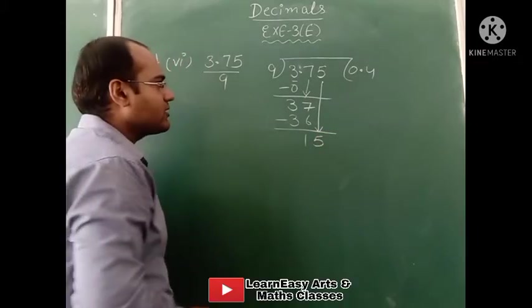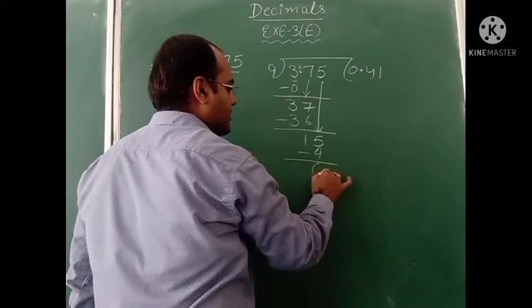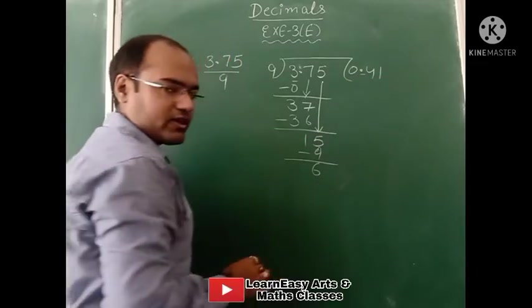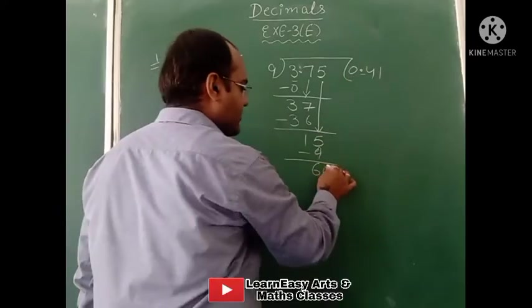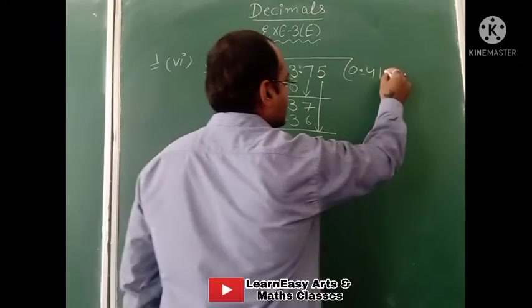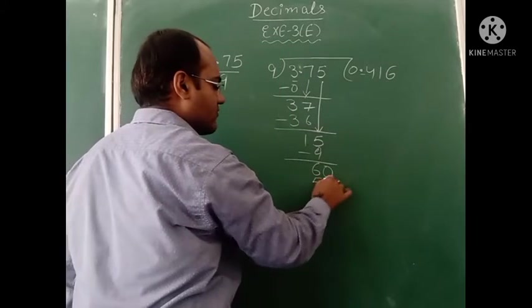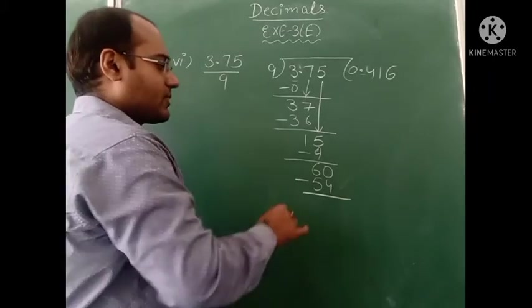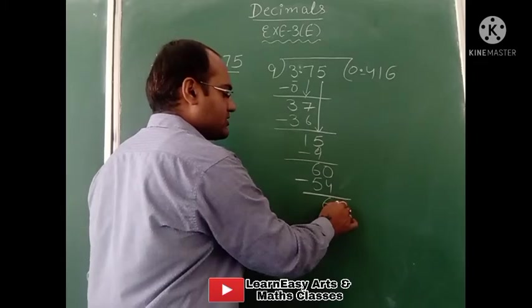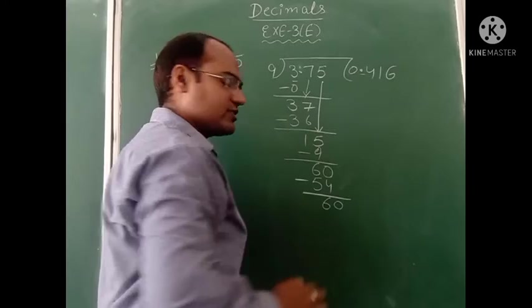9 times 1 is 9. On subtracting, remainder is 6. Decimal is already in the answer, so we add 0. Now this is 60. Reading the 9 times table: 9 times 6 is 54. Remainder is again 6. This 6 becomes 60. Earlier also in the previous step we had 60, and now again we have 60. When we divide again with the table of 9, the answer remains the same: 9 times 6 is 54. So we can add 0 again.